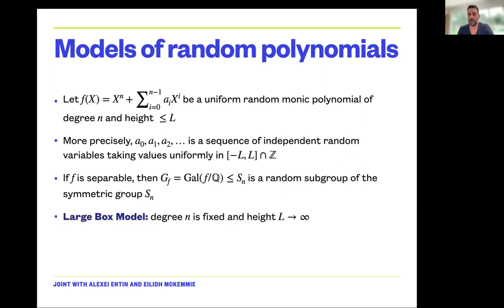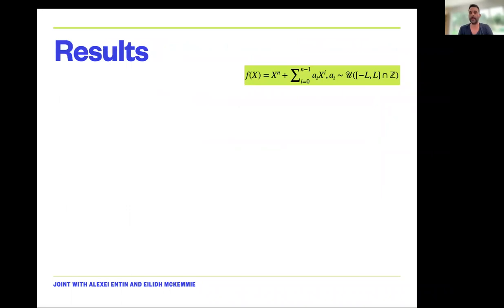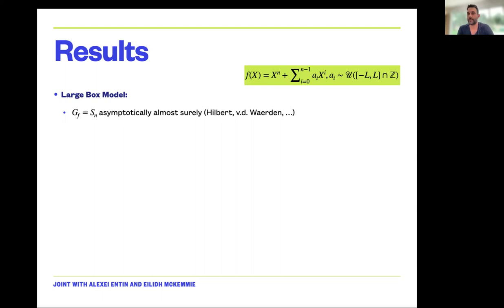The three natural models are: the large box model, where I take the coefficients from a box and the size of the box goes to infinity while the degree is fixed; and the restricted coefficient model, where the size is fixed but the degree grows. These are two natural models for random polynomials over the integers. In the large box model the Galois group of the polynomial is the full symmetric group asymptotically almost surely — this goes back to Hilbert and van der Waerden.